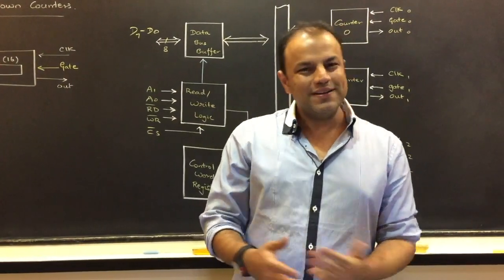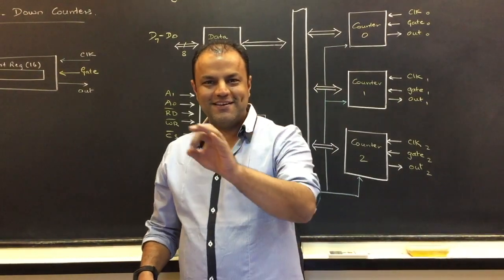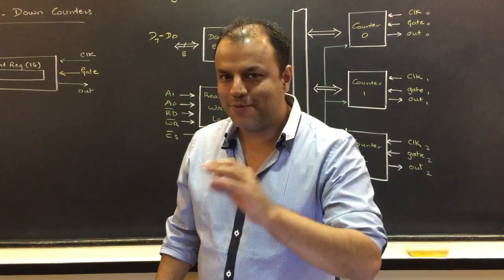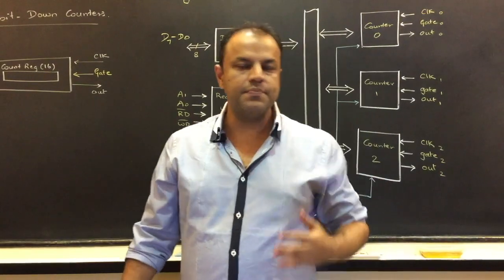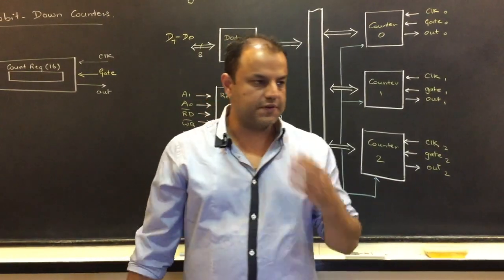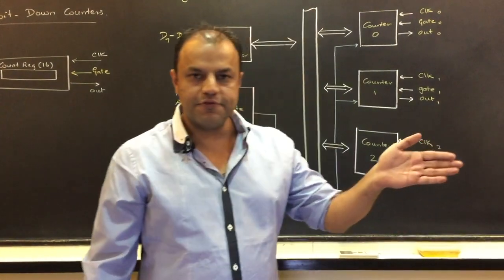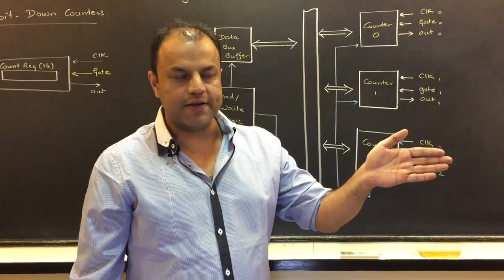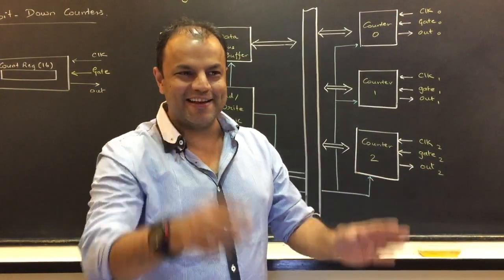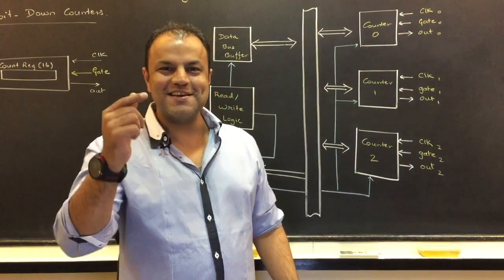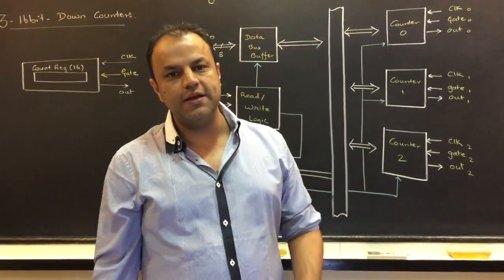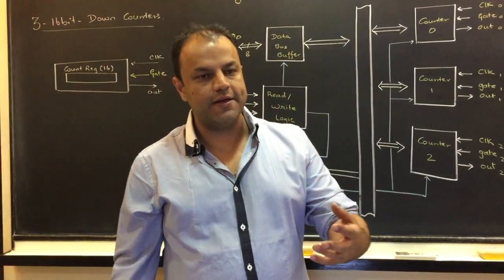What is 8254? It's called a Programmable Interval Timer, which means it's a timer chip. What do you use a timer for? I have set a timer for 10 seconds — what does that mean? I want a delay of 10 seconds. Exactly. Timers are used to produce delays. How do they produce a delay? By counting.